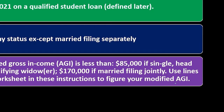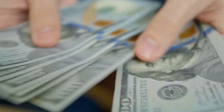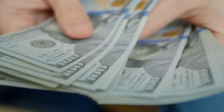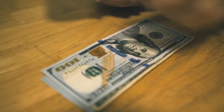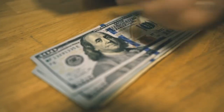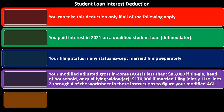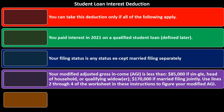Whenever we do these phase-outs, it starts with the AGI and sometimes they modify it. In this case, the student loan interest is itself one of the deductions used to arrive at AGI, which creates a circular problem. So one of the modifications is to add back this particular deduction before calculating the phase-out related to it. Generally, AGI is what's used for phase-out calculations for deductions and credits.